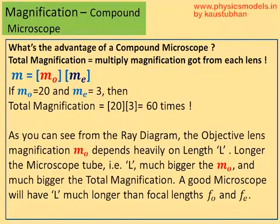With that, we move to this slide where we talk about magnification. The whole advantage of a compound microscope is to get a huge magnification and that's obtained by simply multiplying the angular magnification of the objective lens, M0, into the angular magnification of the eyepiece lens, Me. So, if M0 is 20 and Me is 3, then the total magnification is 60.